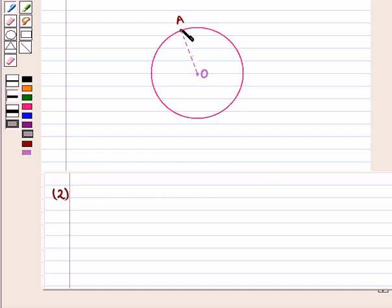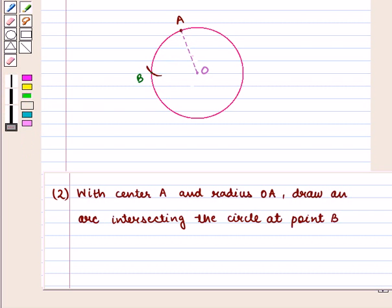Now, with A as center and radius OA, we draw an arc using a compass intersecting the circle at point B. Here with center A and radius OA, we have drawn an arc intersecting the circle at point B.